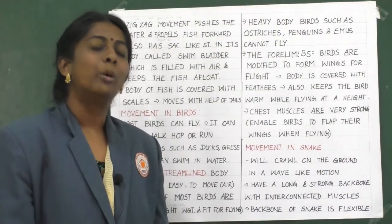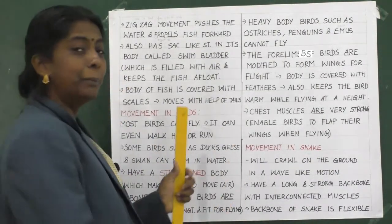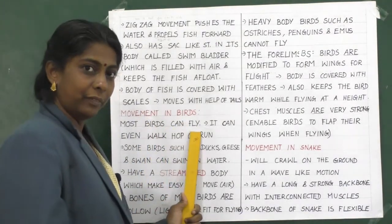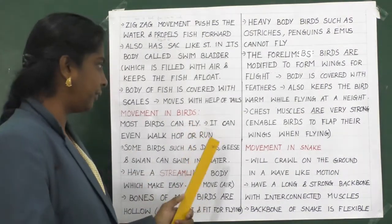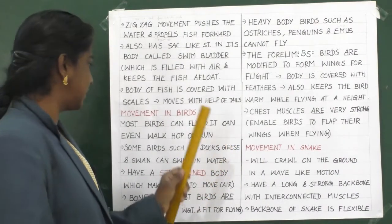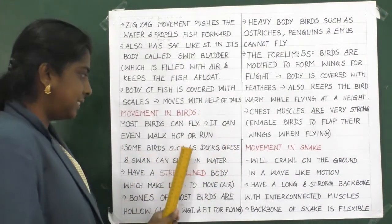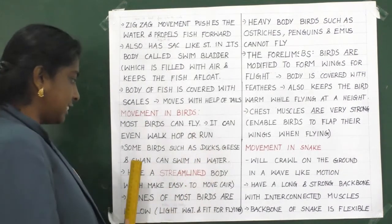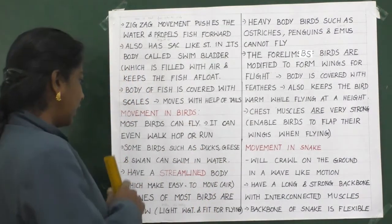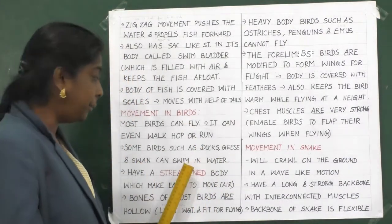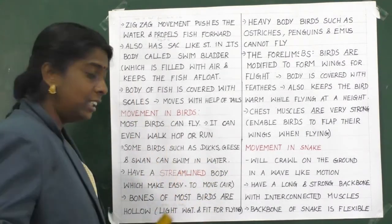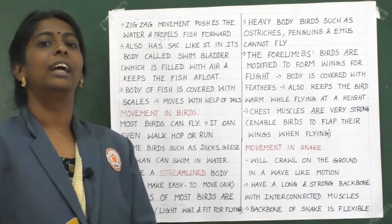Now let us learn about movement in birds. Most birds can fly. They can also walk, hop, or run. Some birds such as ducks, geese, and swans can swim in water. Birds have a streamlined body which makes it easy to move in air.